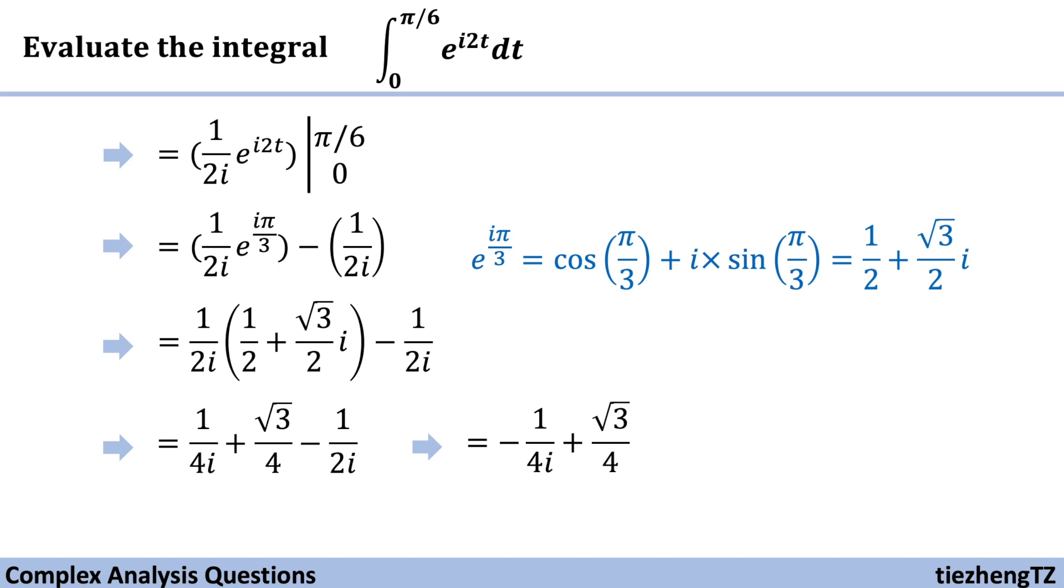And for the first part, we just multiply i to both numerator and denominator parts. We have the final result: i/4 + √3/4.